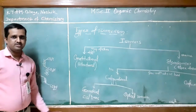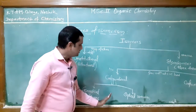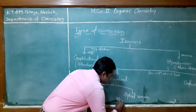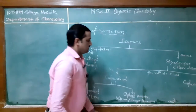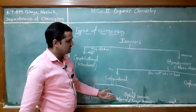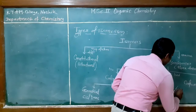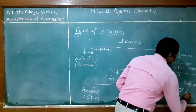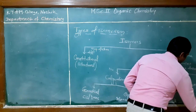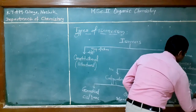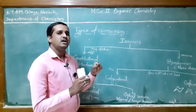Optical isomerism is like mirror-image isomerism — enantiomers and diastereomers are examples of optical isomers. For conformational isomerism, the classic example is cyclohexane, which has different conformations such as chair conformation, boat conformation, twist-boat conformation, and half-chair conformation. These conformational isomers arise because of free rotation of the carbon-carbon bond at room temperature.